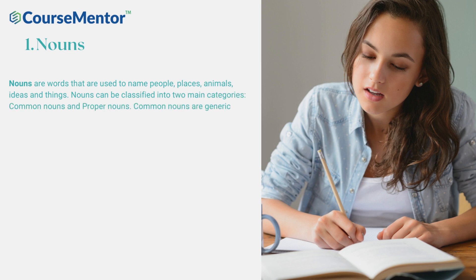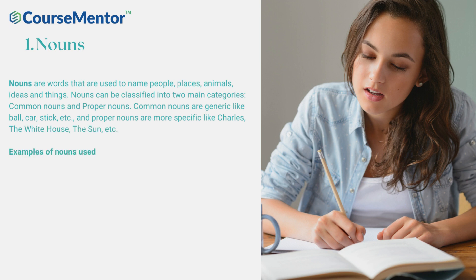Common nouns are generic, like bull, car, stick, etc. And proper nouns are more specific, like Charles, the White House, the Sun, etc.